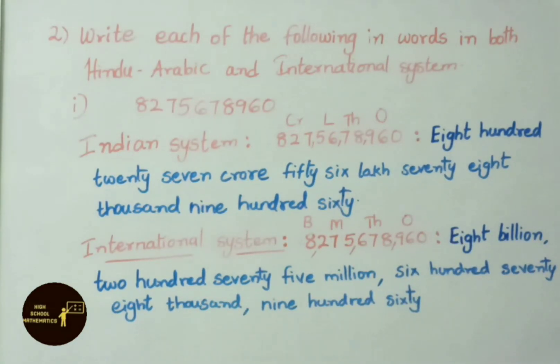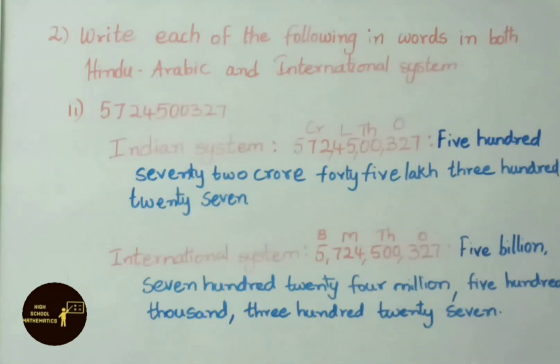Let us see same number in international system: 5,724,567,827. See second one: 5,724,500,327 is the number. We shall write this number in Indian and international system. In Indian system, the number is 572,45,00,327.